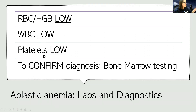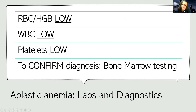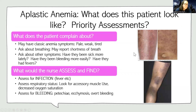These three values are all going to be low, and we're going to confirm the diagnosis — sometimes through bone marrow testing — to see how much cells are actually being produced and if something is going on in the bone marrow. Since there are three different cells with issues, there are at least three different things I need to assess for.